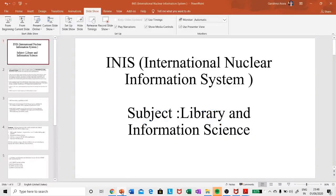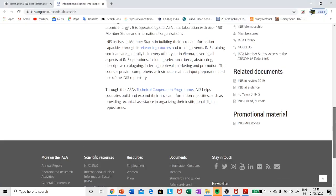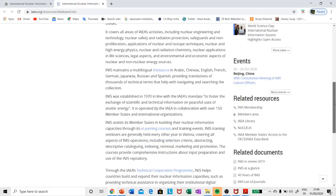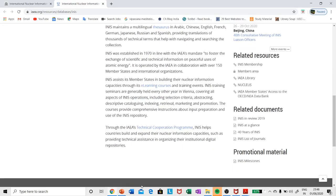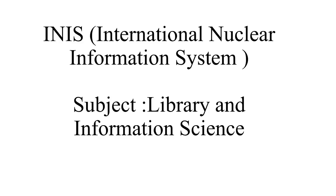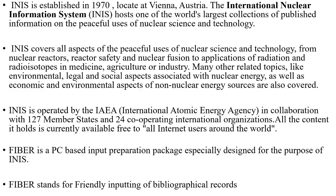Hello friends, today we will start with INIS. INIS acronym is International Nuclear Information System. You can see the website of INIS. INIS is established in 1970, located at Vienna, Austria. The International Nuclear Information System hosts one of the world's largest collections of published information on the peaceful uses of nuclear science and technology.